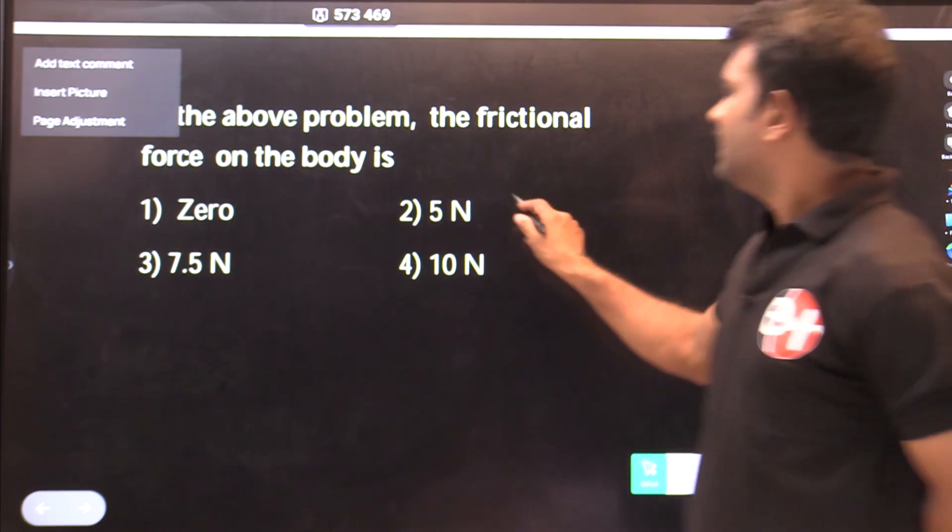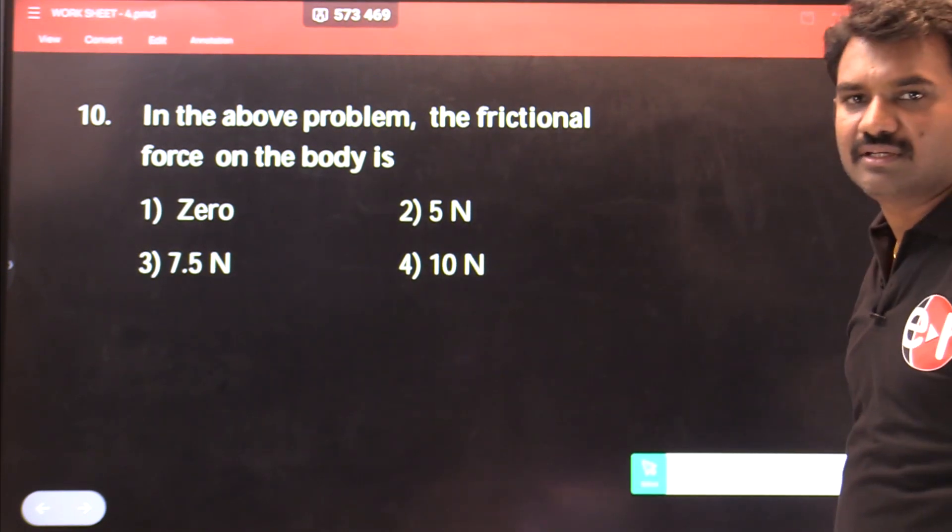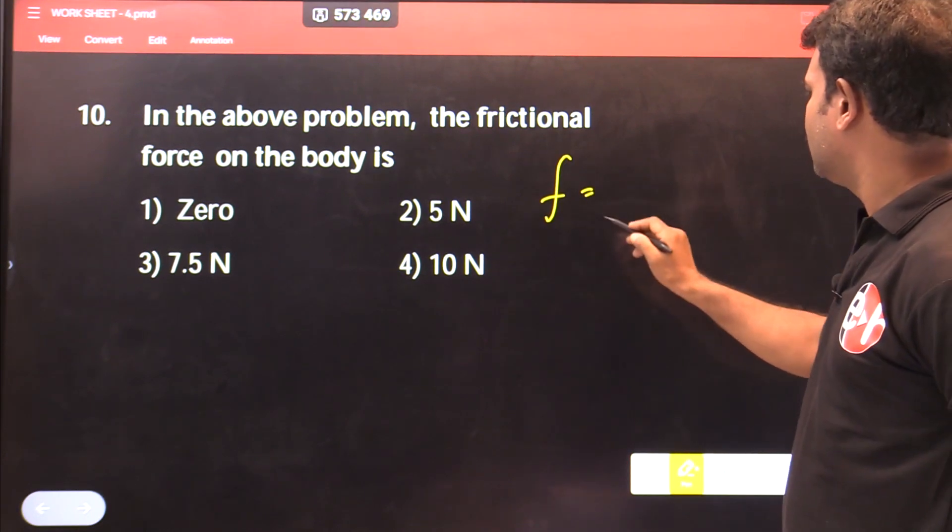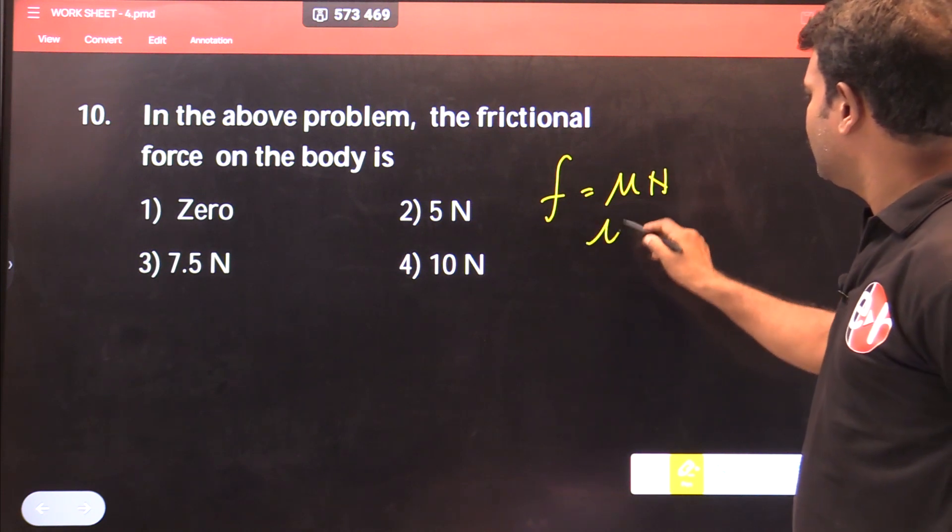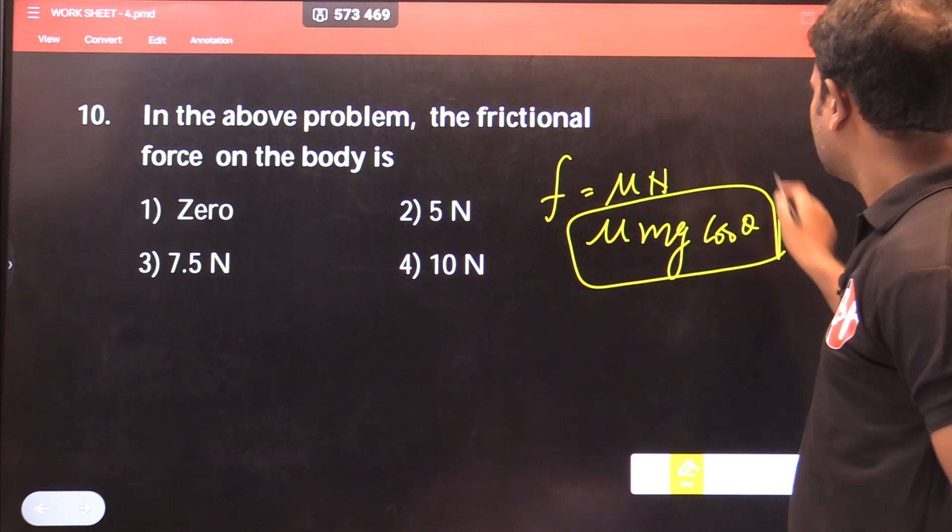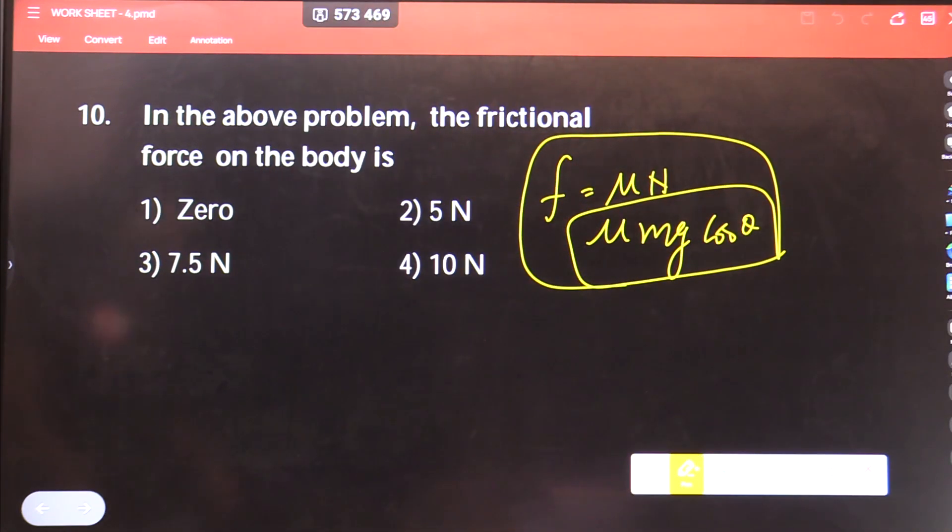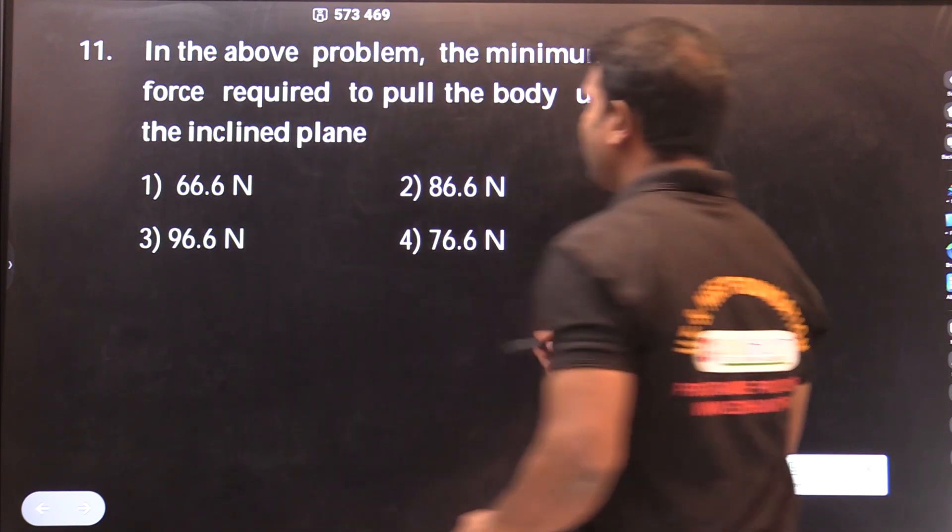In the above problem, the friction force on the body is. Friction force equals mu into n, which equals mu into mg cos theta. So this will be the answer.